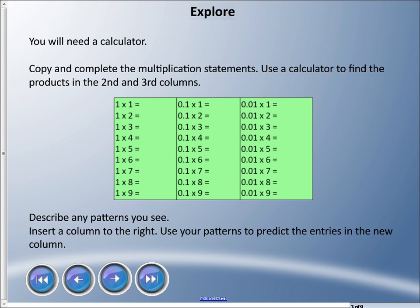I want you to try this. You'll need a calculator, and you can use your phone, your iPod, whatever you have. Try and copy this down, so we have 1 times 1, 1 times 2, and then the next column we have 0.1 times 1, and then the other one is 0.01 times 1, and so on. I'm sure you can fill in the first column on your own, but the second and third columns you will probably need a calculator.